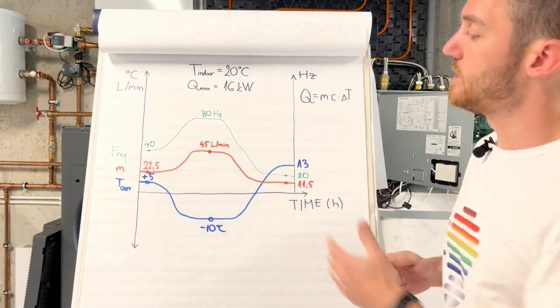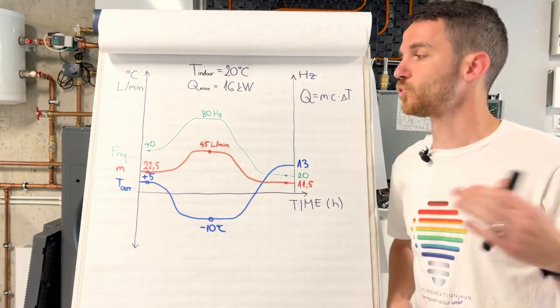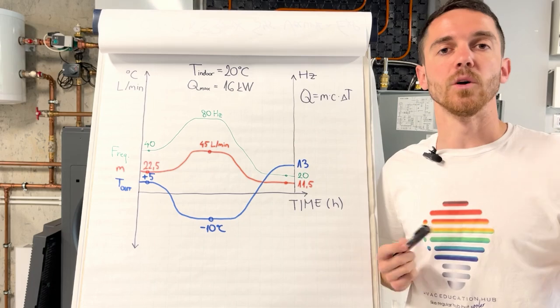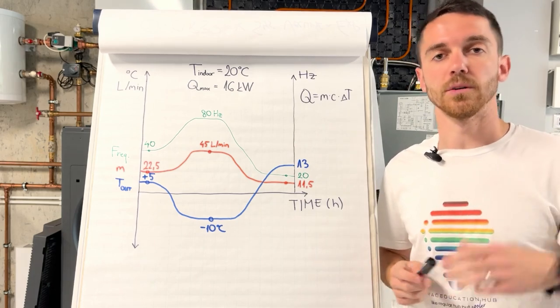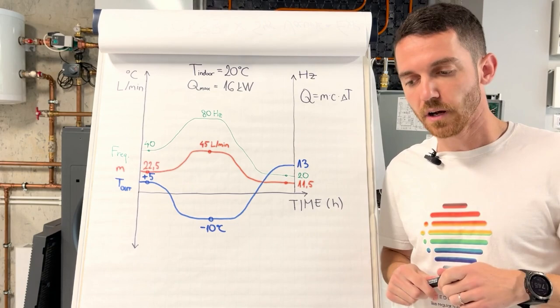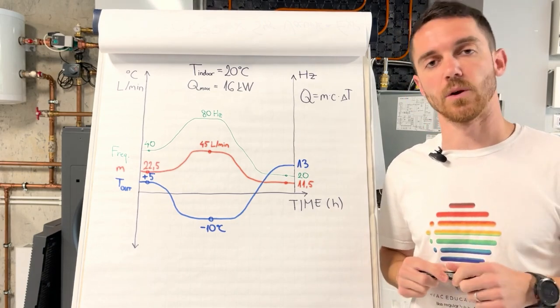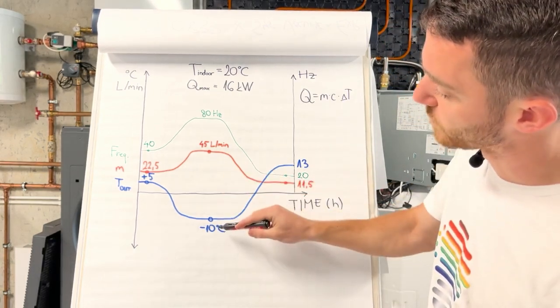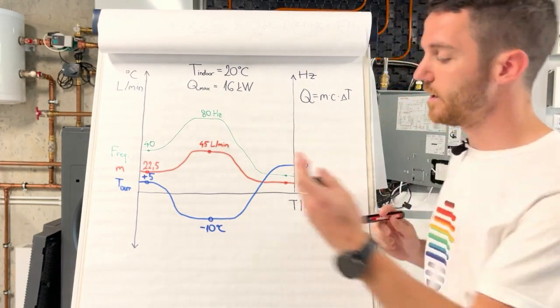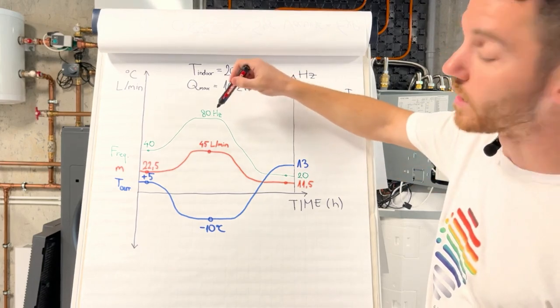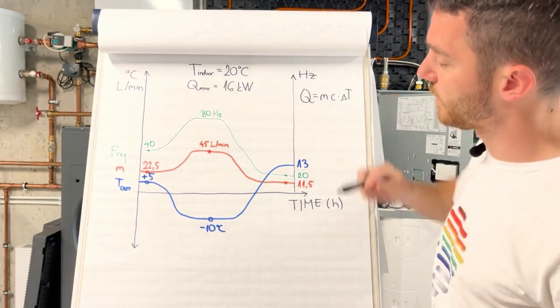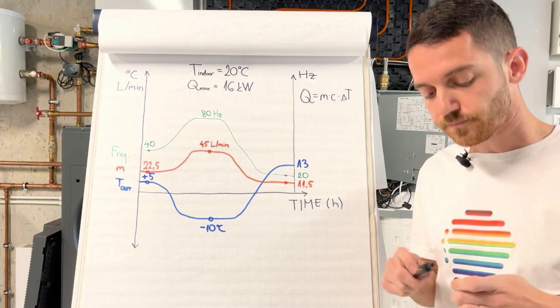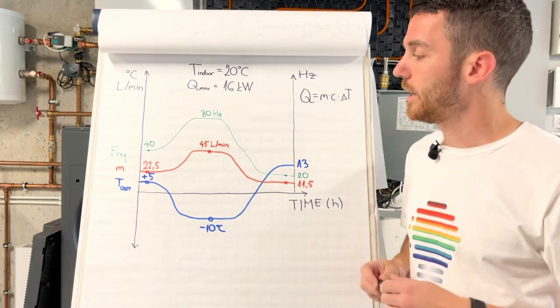In this diagram I put three main variables what we need to understand in order to know what is our heat loss, consumption, and flow rate. In this example we have designed outdoor temperature of minus 10 degrees. At that point our compressor is working almost on full load, 80 hertz, and our flow rate is 45 liters per minute.